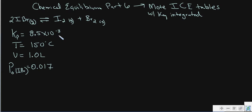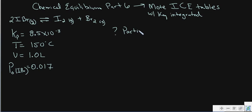I have a temperature of 150 degrees which remains constant, and a volume of one liter that remains constant. The initial partial pressure of IBr is 0.017 atm. The question is: what are the partial pressures at equilibrium? Let's start by solving for the partial pressure of IBr, and you could easily solve for the rest once you find that.